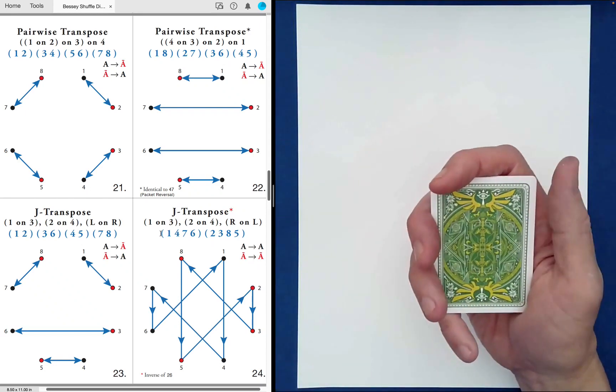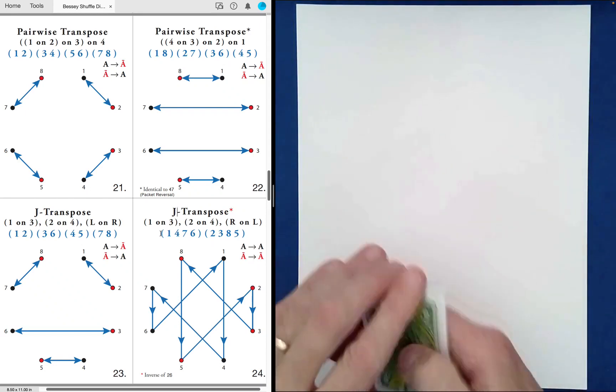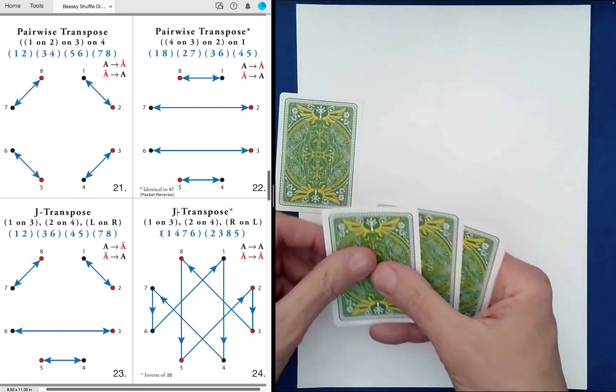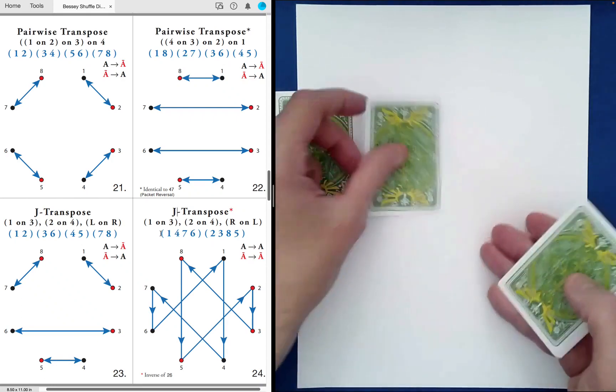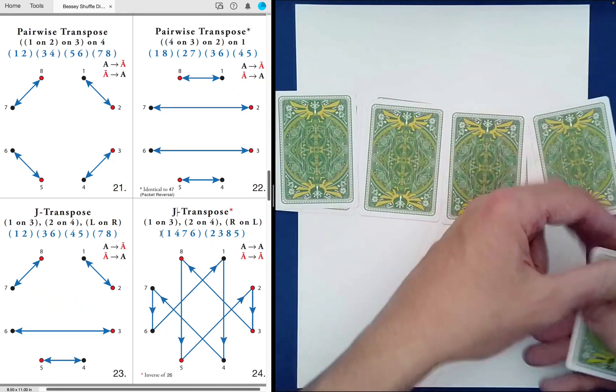Which one would you like next? Shuffle 21? Okay, we can do that one next. So we do one, two, one, two, one, two.